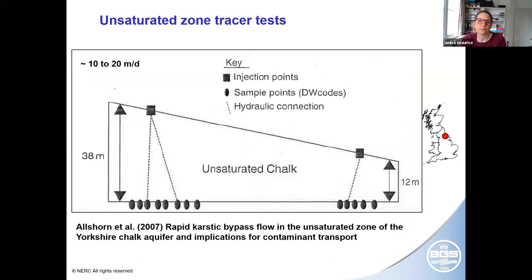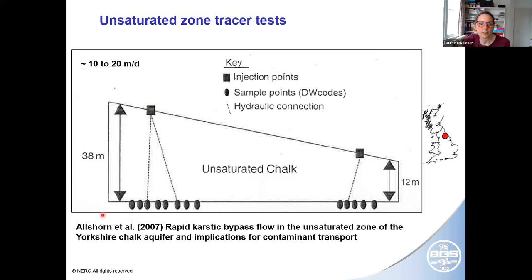There's also evidence for these features from tracer tests through the unsaturated zone. Work by Sam Allshorn and the Leeds University team demonstrated rapid flow — injections were made at arbitrary points on the surface, not into a karst feature or fissure, and yet the tracer was still detected quite rapidly in fissures in tunnels up to 38 metres below the surface.